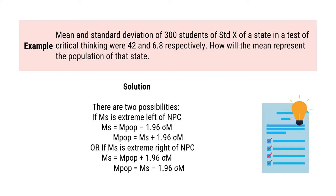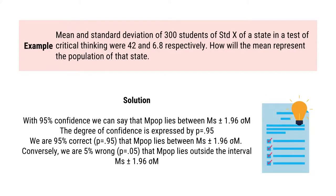If the sample mean is at the extreme right — a positive deviation — then sample mean equals population mean plus 1.96 sigma m, so population mean equals sample mean minus 1.96 sigma m. With 95% confidence, we can say that the population mean lies between sample mean plus minus 1.96 sigma m. The degree of confidence is expressed by 0.95. We are 95% correct that the population mean lies between sample mean plus minus 1.96 sigma m. Conversely, we are 5% wrong — that the population mean lies outside this range.